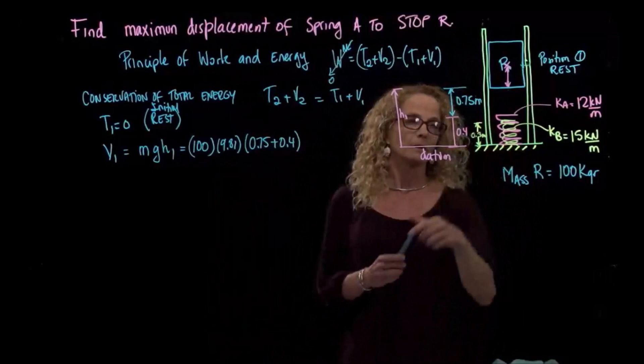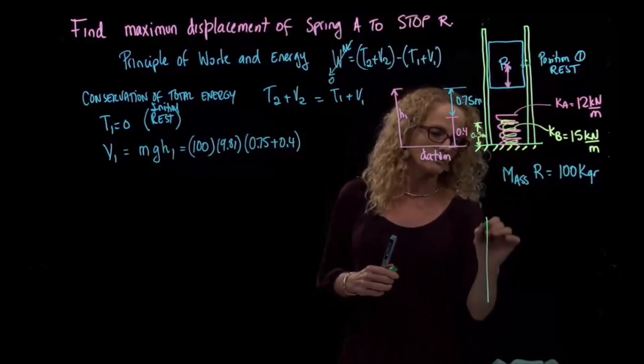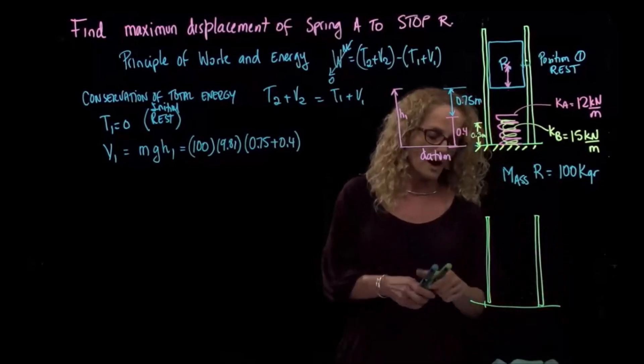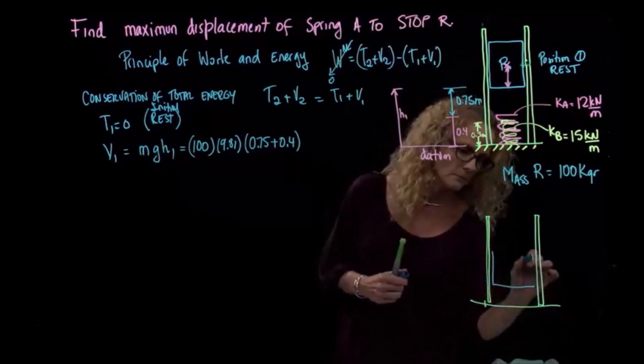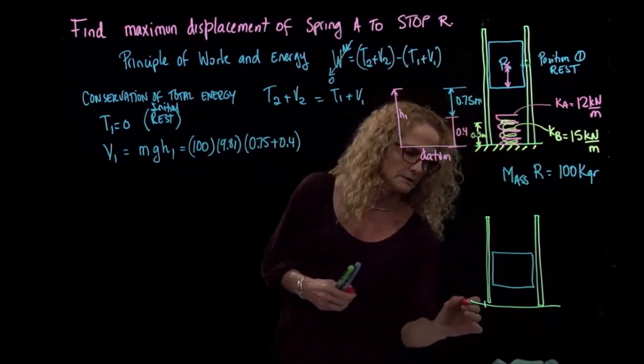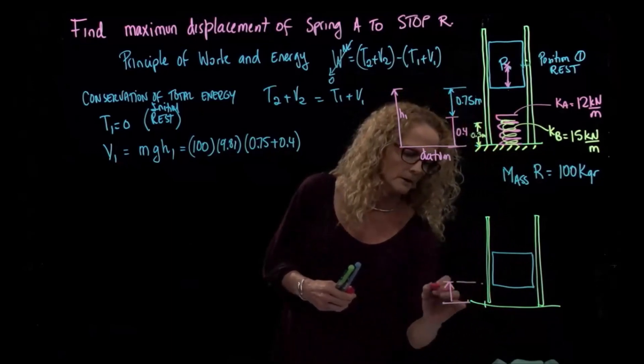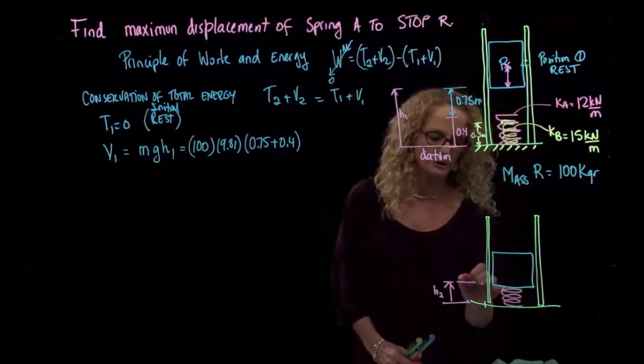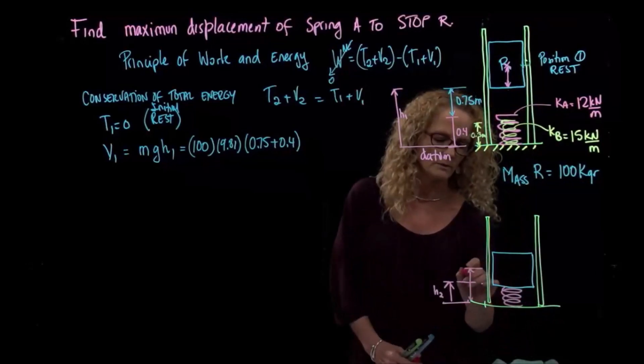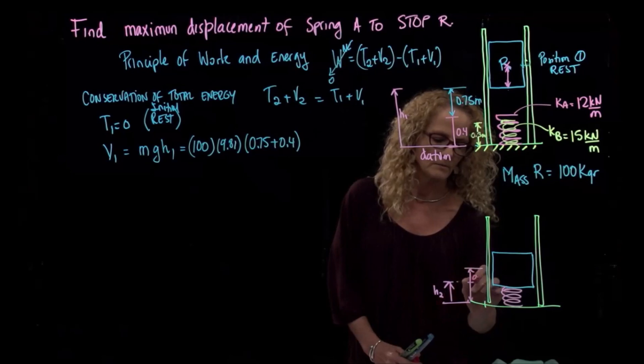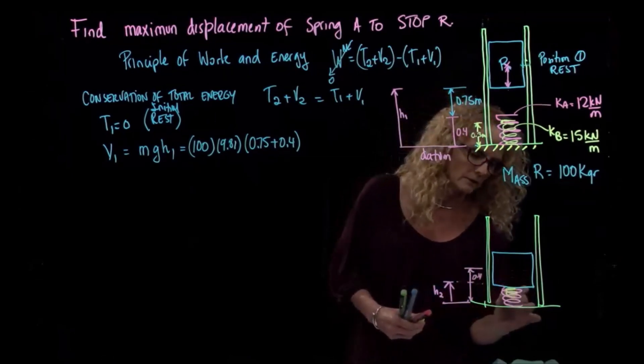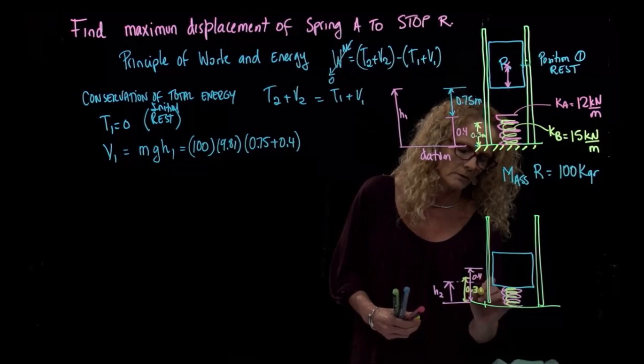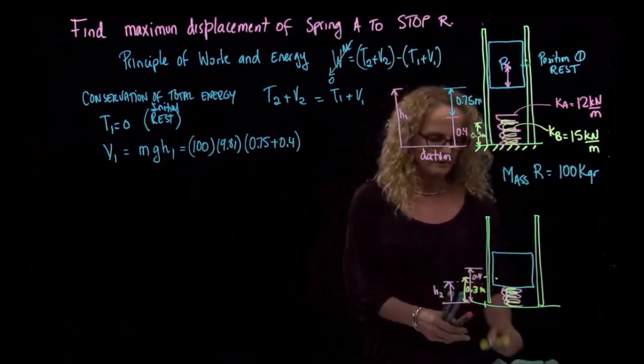So we will think that if this is position 1, if we draw our position 2, I'll draw it over here because if not it will get too crowded. So I will draw my block over here. This is the distance that I want to find, H2. Both springs will be compressed. My initial distance was 0.4, and the other spring is also compressed, 0.3 meters. So both springs are compressed in my second position.